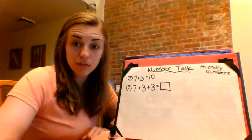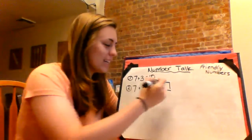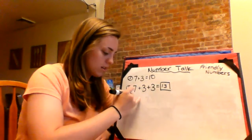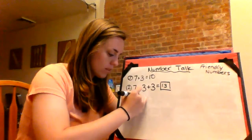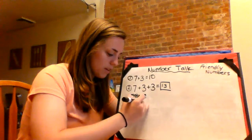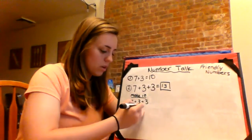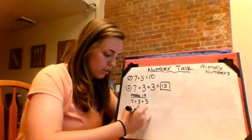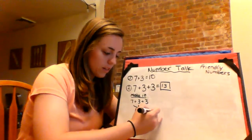What's our answer? Three, two, one. Thirteen. How did we get thirteen? We made a ten. How did we make a ten? What two numbers did we put together? We had seven, three, and three. Put seven and three together, we got ten. Three more, we get thirteen.